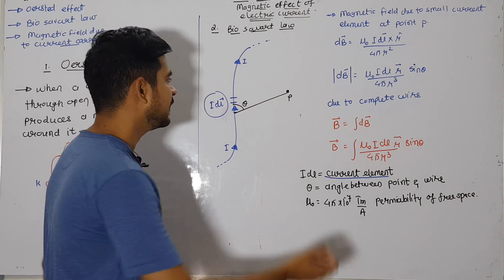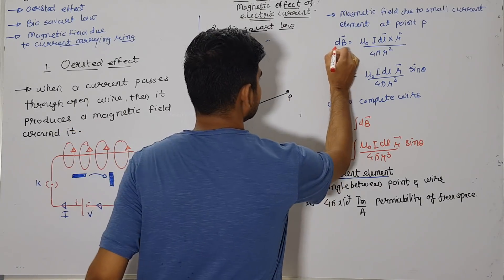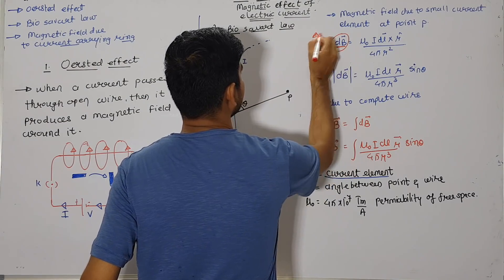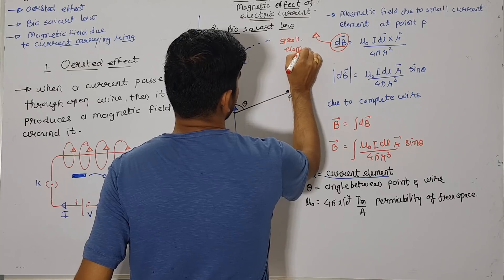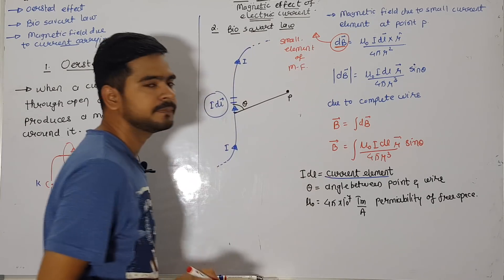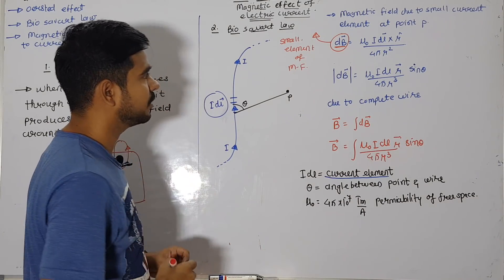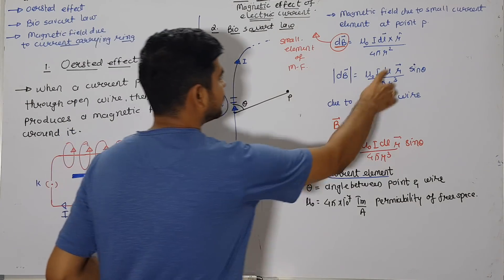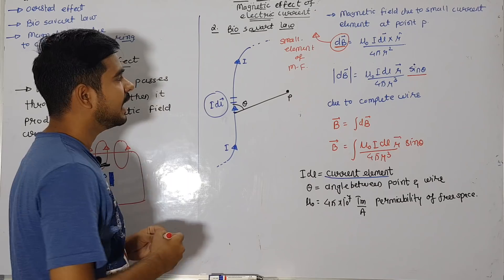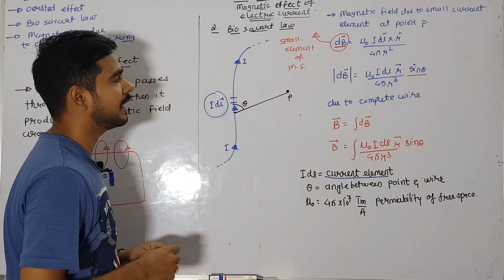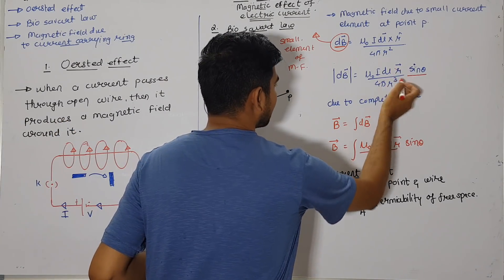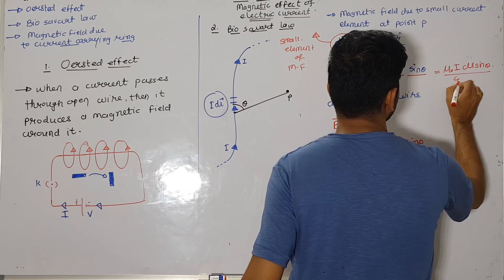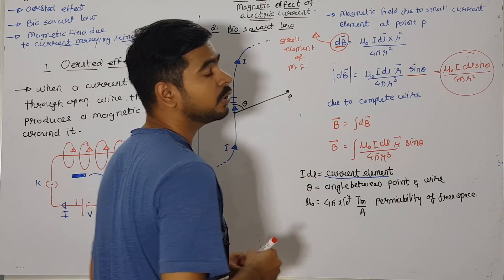Practically it is found that the magnetic field at that point is given by dB, the small element of magnetic field, equal to μ₀ idl × r̂ / (4πr²). When you remove the cross product, you use sine theta, so in magnitude: dB = μ₀ idl sinθ / (4πr³). Cancelling one r with r³, the final answer is dB = μ₀ idl sinθ / (4πr²). This is the small amount of magnetic field due to one current element.